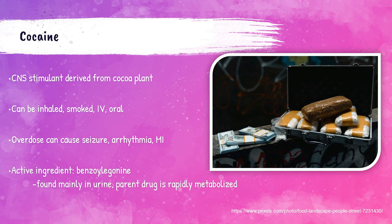Cocaine is derived from the coca plant and acts as a stimulant to the central nervous system. The active ingredient in cocaine is called benzoylecgonine. It can be inhaled, smoked, taken orally, or injected via IV. The drug is rapidly metabolized and can be detected mainly in the urine. Overdoses of cocaine can cause a patient to have seizures, heart attack, or heart arrhythmia.